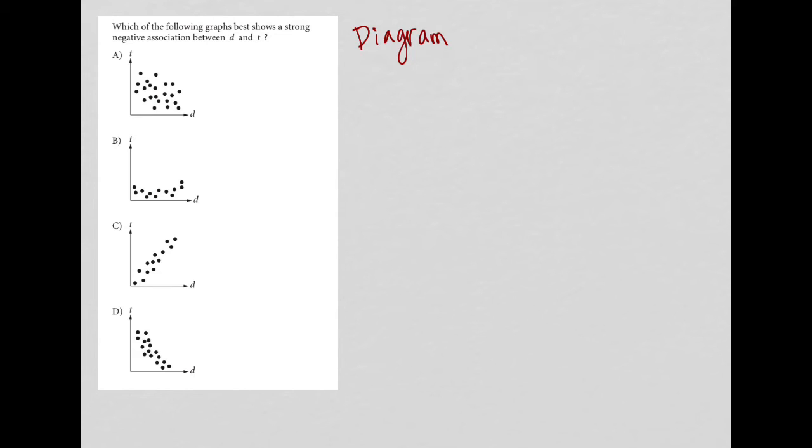So what's important here? What's important is understanding what strong and negative and association actually mean. So strong on a graph means that all of the values are close together, versus a weak association would be where the values are more spread apart.